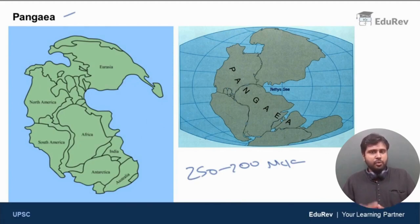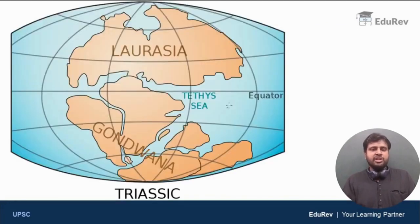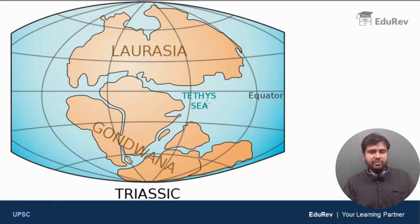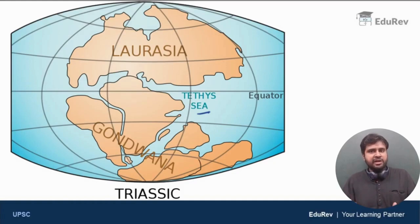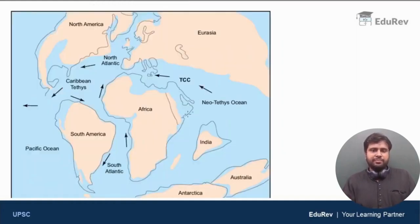We know that the tectonic plates are in motion — not stationary. So eventually, Pangaea broke up into two parts: the northern part called Laurasia and the southern part called Gondwana. Tethys is here. These landmasses further broke up into individual parts because the tectonic plates are in constant motion.